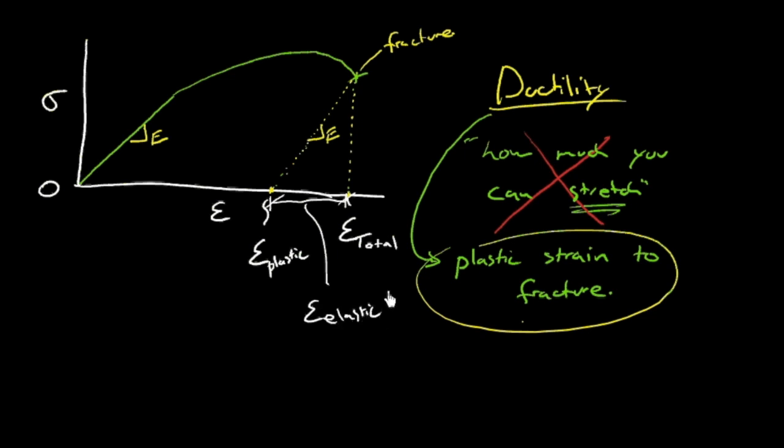And that makes sense, because what is that? That's the strain underneath this linear unloading portion. And the unloading portion, if it's linear, is governed by Hooke's law. And we know that it's elastic, because Hooke's law refers to elastic behavior. So if we unload down and we get plastic strain, that plastic strain has got to be the ductility. So ductility, you unload at fracture, and the remaining strain is the ductility.